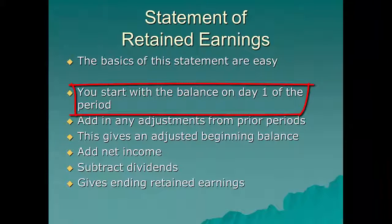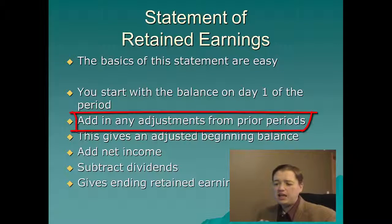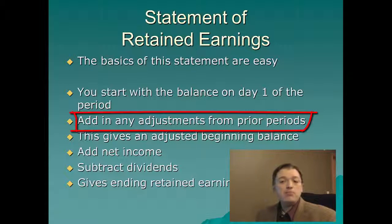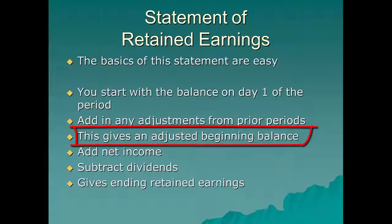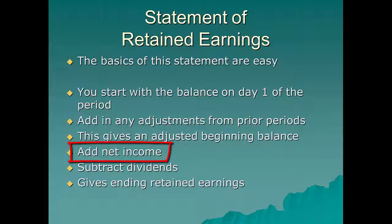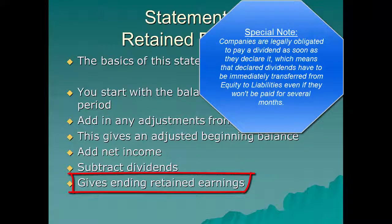So we're going to start with beginning retained earnings. We're going to add in any adjustments from prior periods — if I've made mistakes that I've now corrected, if I've made some changes because of a GAAP rule that has changed, those go in there. If I've changed principle, this is one of the places that gets hit. Then I get retained earnings as of January 1 as adjusted. I add to that my net income from my income statement, I take out my dividends declared over the course of the year, and that gives me my ending retained earnings.